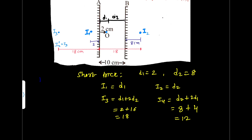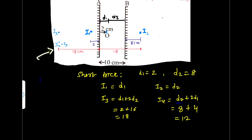If the question asks for the fourth image, or the second image formed by mirror 2, we use the formula d2 plus 2·d1. Here d2 is 8 and d1 is 2, so it is 8 plus 2 times 2 = 8 plus 4 = 12 centimeters. But in this problem it is asked only up to the second nearest image behind mirror A, so our final answer is 18 centimeters.